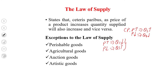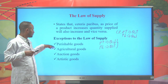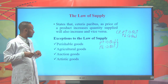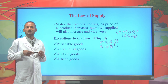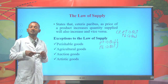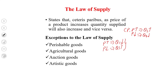Artistic goods are also against the law of supply. That means as price of artistic goods increases, then the quantity supplied for artistic goods will not increase or it remains unchanged. And with falling price of artistic goods, the quantity supplied for artistic goods will not decline or it remains unchanged.